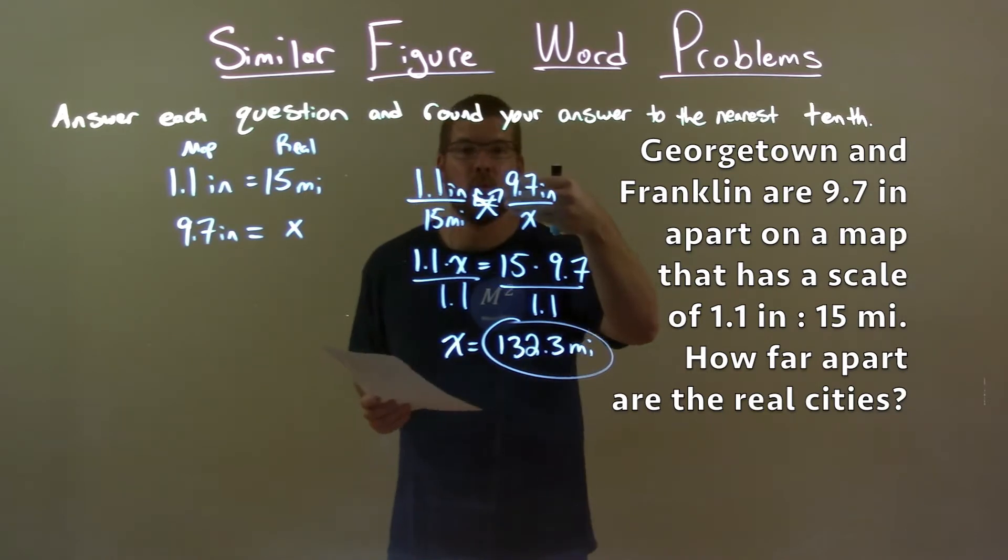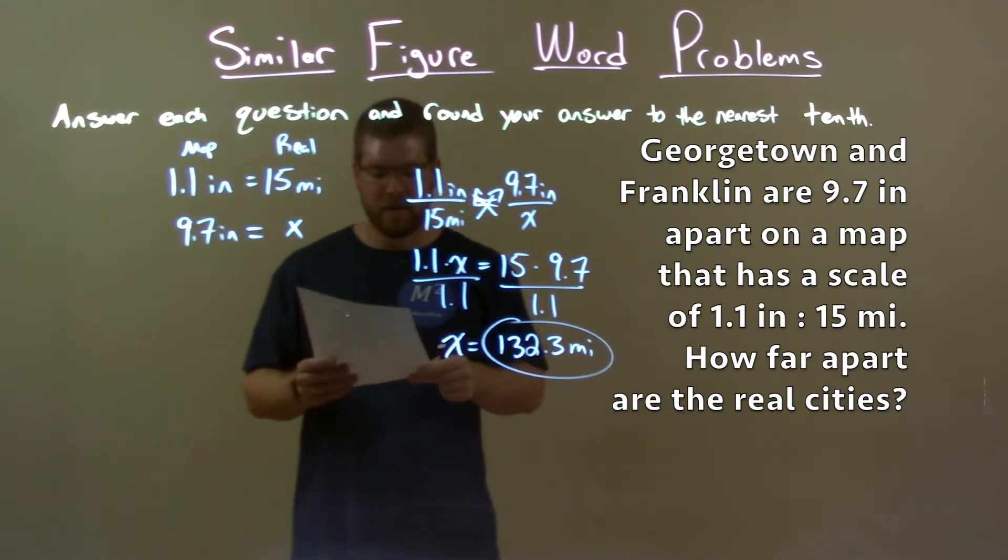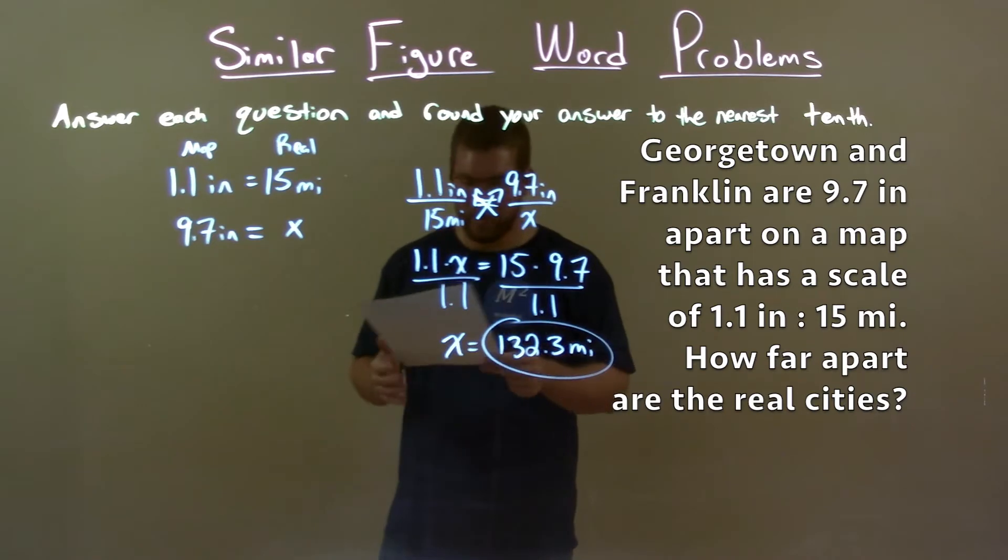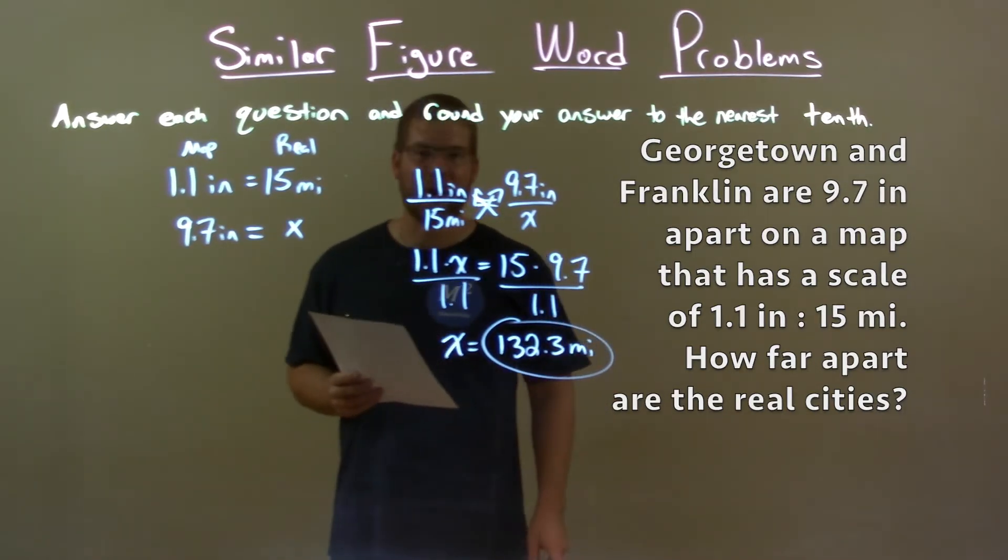From there we created a proportion. Then we solved for our variable x and got a final answer of the distance between Georgetown and Franklin to be 132.3 miles.